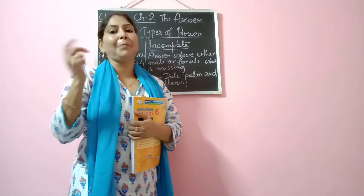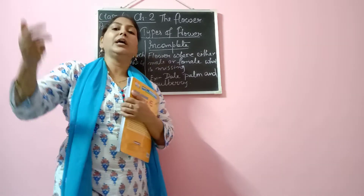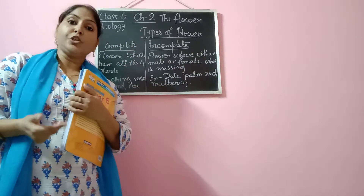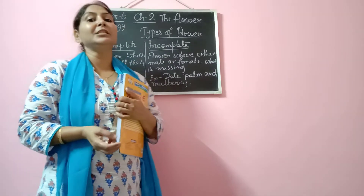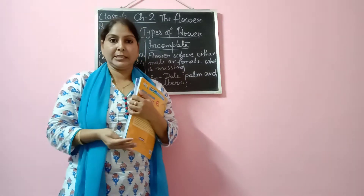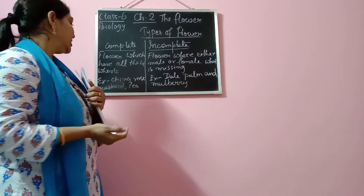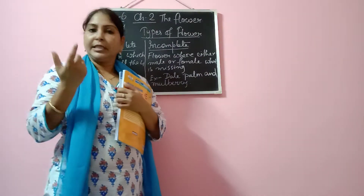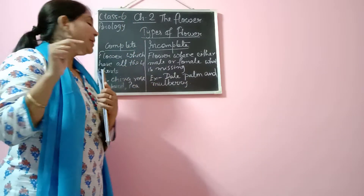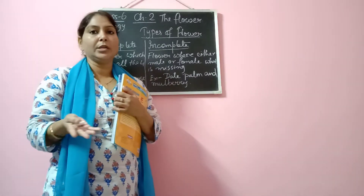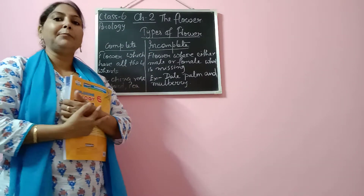As we discussed, the parts of flower include the outermost layer calyx, then corolla, after that androecium, then gynoecium. So a complete flower means a flower which has all four whorls — only then it is called a complete flower. For example, chandleroast, mustard seeds, and peas. Mustard flower has got all the whorls, pea flower also has all four whorls.